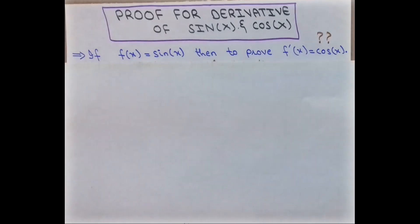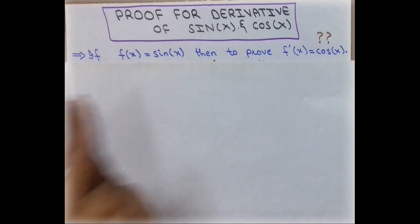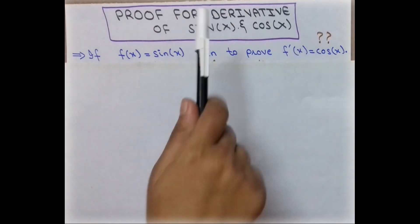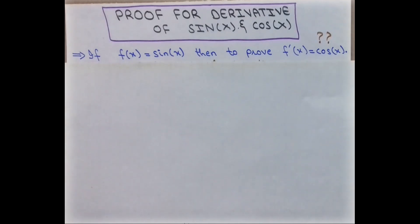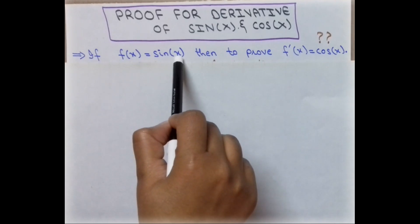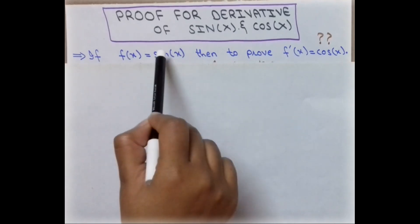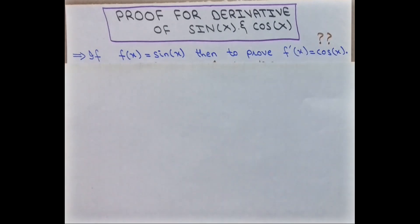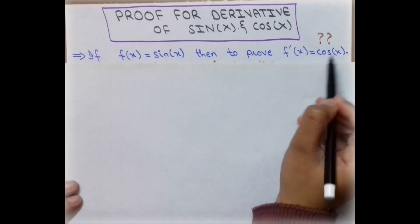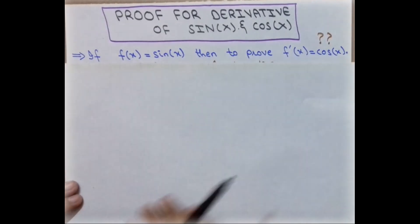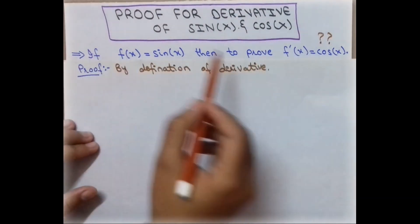Welcome to Math Society. Here we are back with another video. In this lecture we will discuss how to prove the derivative of sin x and cos x. We will prove both — if f(x) = sin(x), then the derivative is cos(x). We just have to prove this fact, so let's start this lecture.